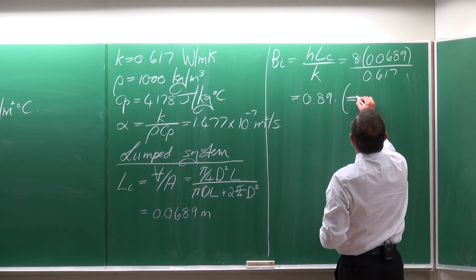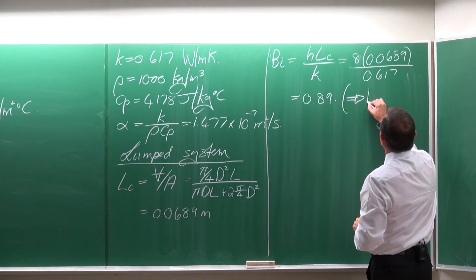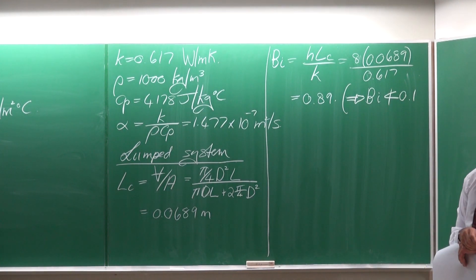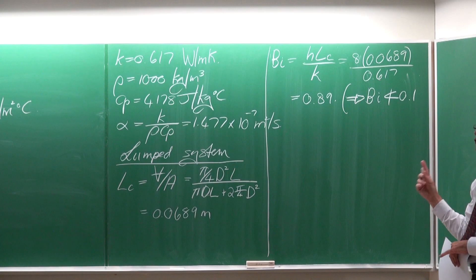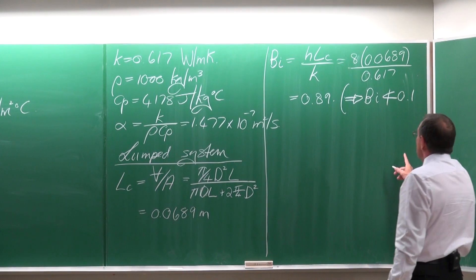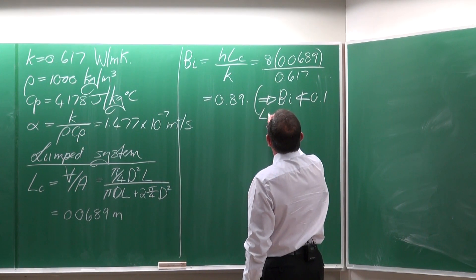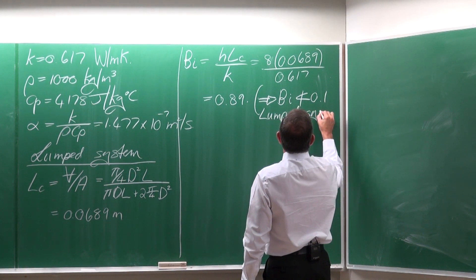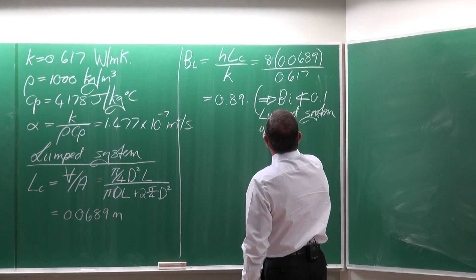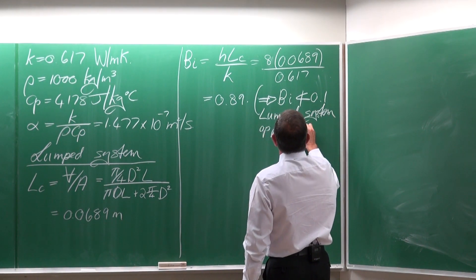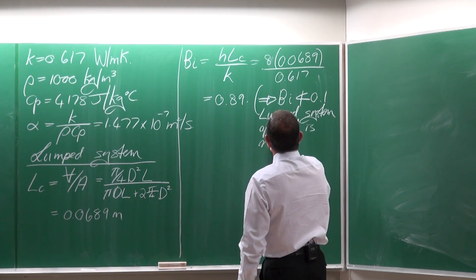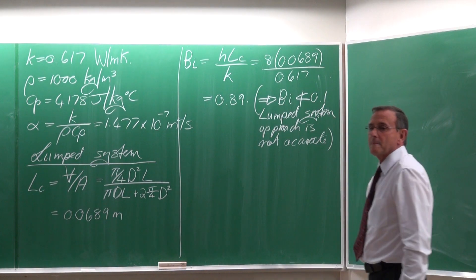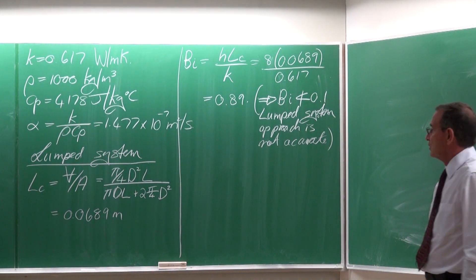The heat transfer coefficient is 8, the characteristic length is 0.0689, divided by the thermal conductivity of 0.617, and it gives us a Biot number of 0.89. The Biot number is not smaller than 0.1, so therefore we should know that the lump system approach is not going to be accurate.